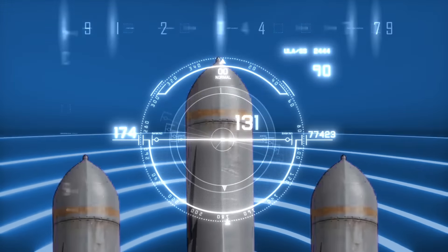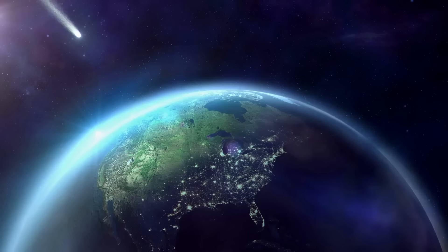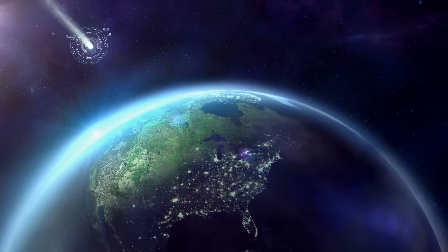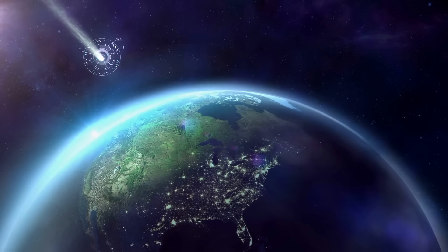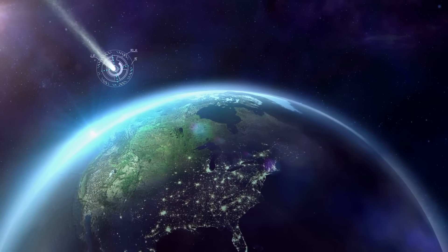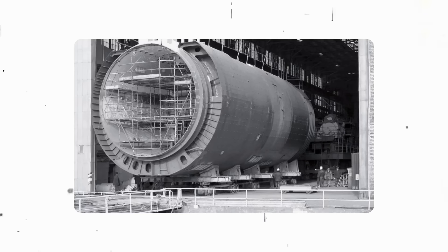Submarines do have rockets, they are just not attached to them. So, theoretically, if you turn those missiles around and launch them in reverse, they could help slow down the submarine. But there, you'll encounter a new problem.